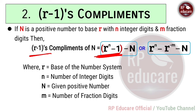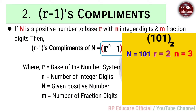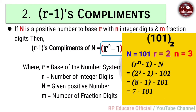For example, using the same number 101 base 2: capital N = 101, small r = 2, small n = 3. Applying the r-1's complement formula: 2 to the power 3 minus 1 minus 101. Solving: 2³ - 1 = 7. Converting 7 to binary gives 111. Then 111 minus 101 = 010. So the 1's complement of 101 is 010.